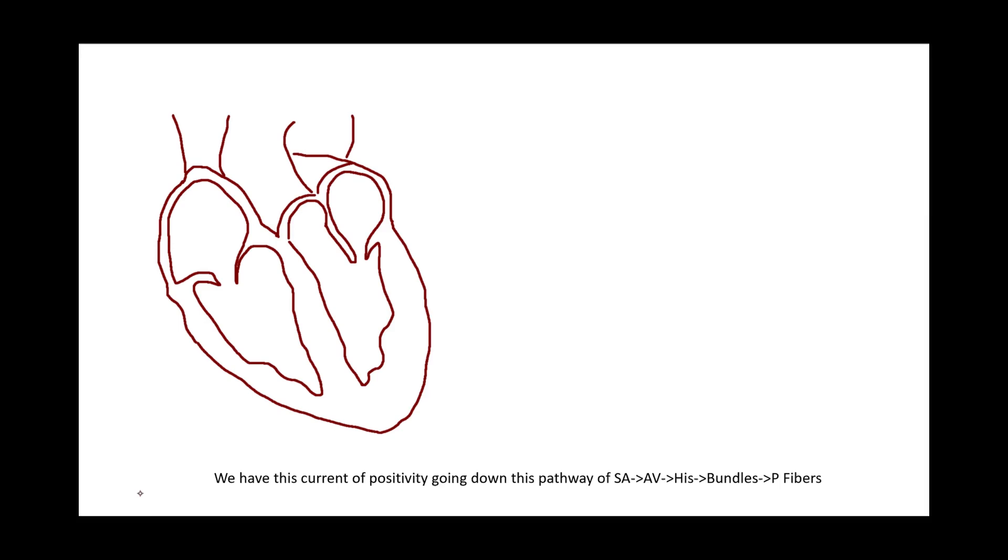So we have this current of positivity, or this depolarization, that's traveling down this pathway all the way from the SA node to the Purkinje fibers. Let's try to understand how that's related to EKGs. So let's say I placed electrodes around the heart. I'll put a positive electrode here and a negative electrode here. These electrodes, when you place two of them, they create something called a lead. And a lead allows us to essentially look at or view the electrical flow through the heart. In the lead that I drew on the screen, you can see that it's in this direction.